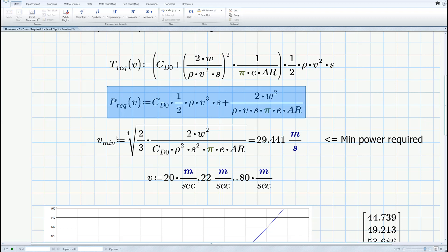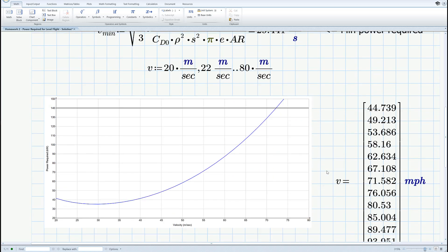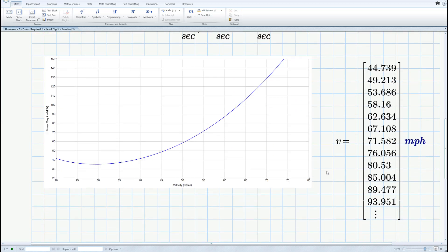Now the derivative with respect to V is pretty simple to write down and you can see right here I just solve for V min. The only funny part about it is there's a fourth root there - it's pretty rare to see fourth roots in anything but here we are. And the last thing I did is I defined a range of velocities to plot starting at 20 meters a second going up in steps of 2 to 80 and there's the plot.